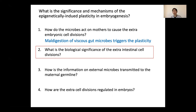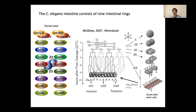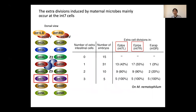The second question is: what is the biological significance of the extra intestinal cell divisions? The C. elegans intestine consists of 9 intestinal rings, INT1 to INT9. The first INT ring contains 4 cells, and the other INT rings each contain 2 left and right cells, so there are 20 intestinal cells. The C. elegans embryo has only 2 primordial germ cells, namely Z2 and Z3, which are closely associated with the INT5 cells during embryogenesis. Our imaging and cell tracking shows that the extra divisions occur mainly in the posterior INT7 cells.